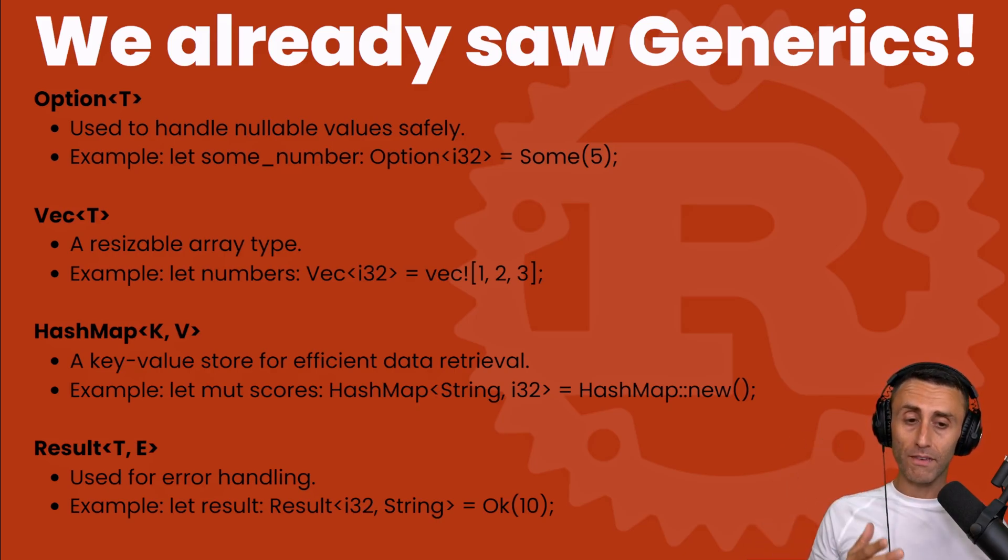We saw this when we introduced Option<T>. I remind you that we don't have null in Rust, so this is handled by Option<T> because this can be anything or none. When we introduced the vector collection, we can have a vector of characters, a vector of numbers, so this has a generic type. When we introduced the hash maps with key-value pairs, this is why you see K, V.